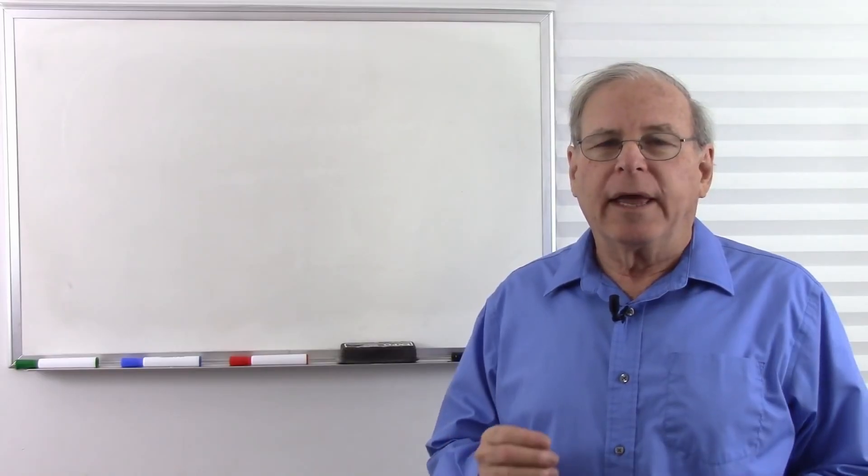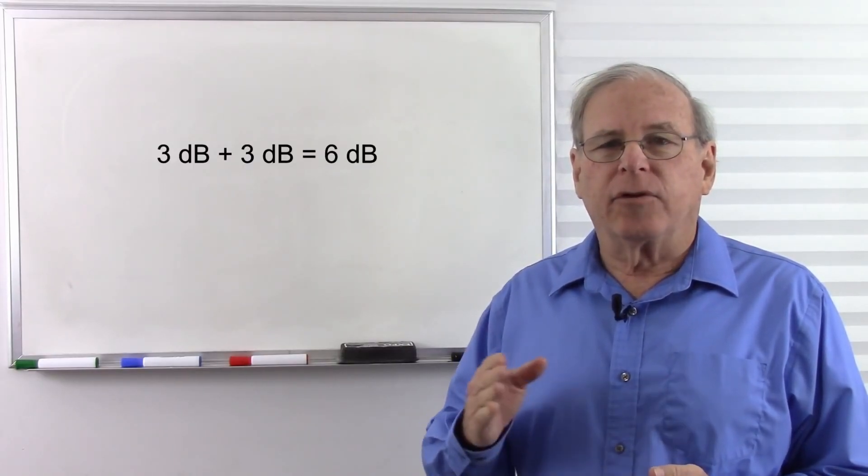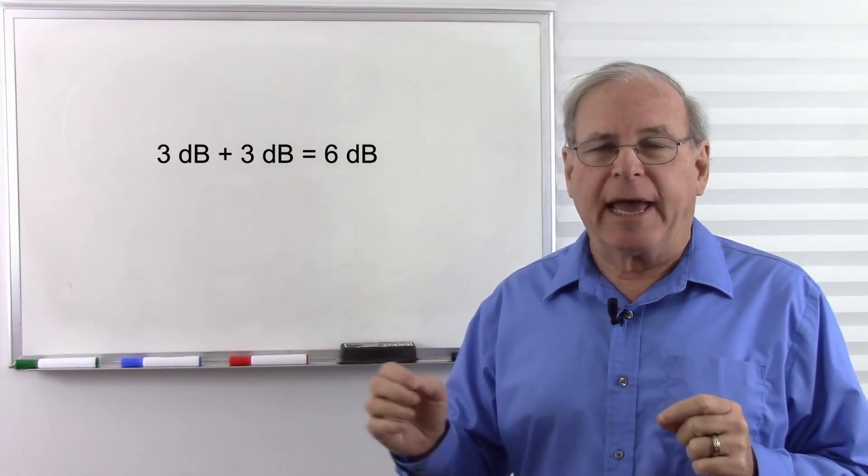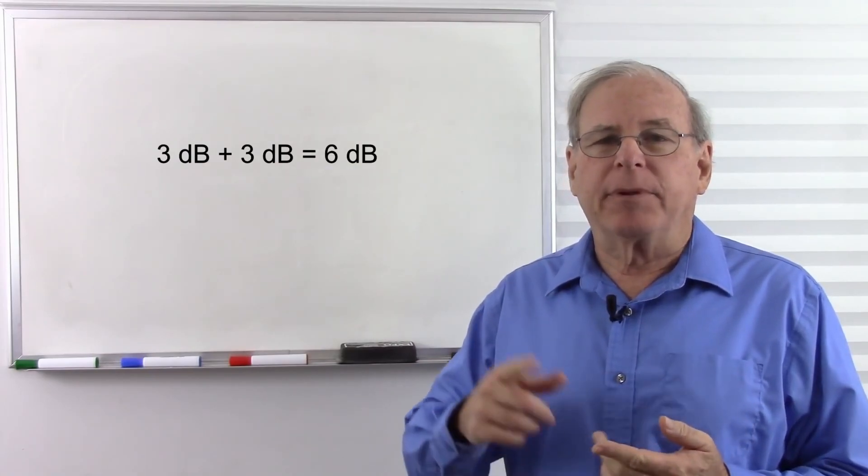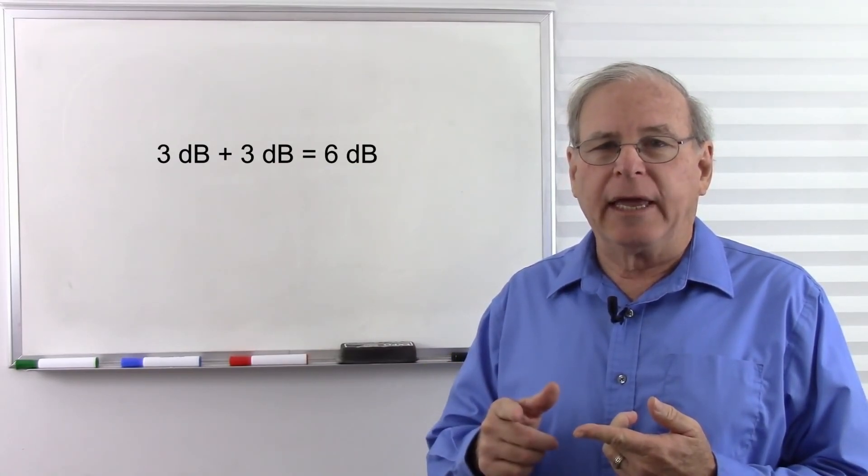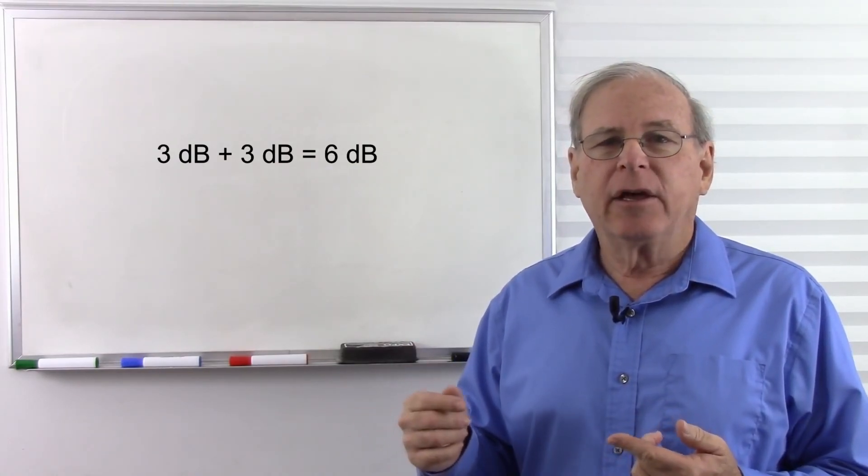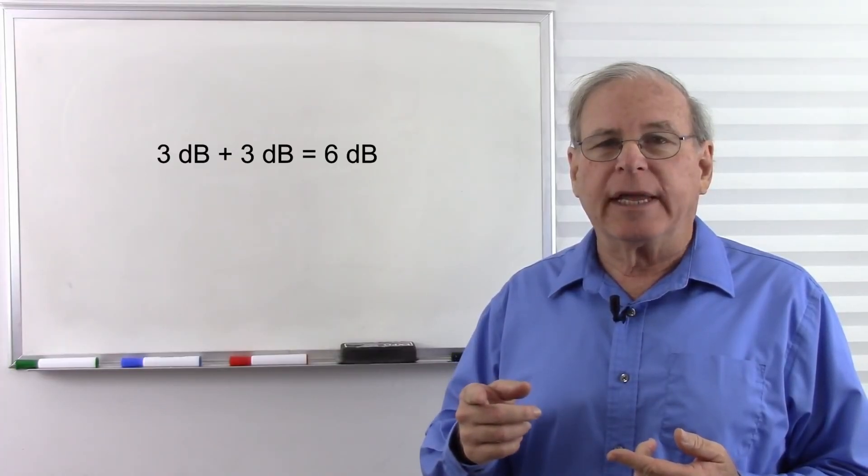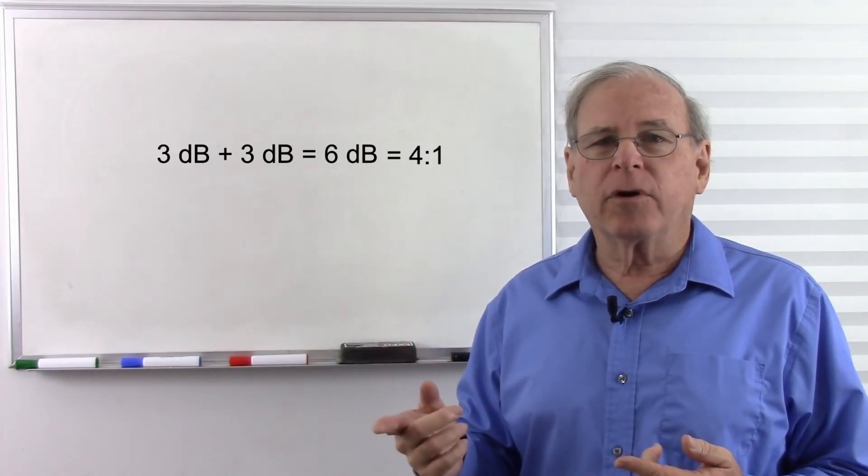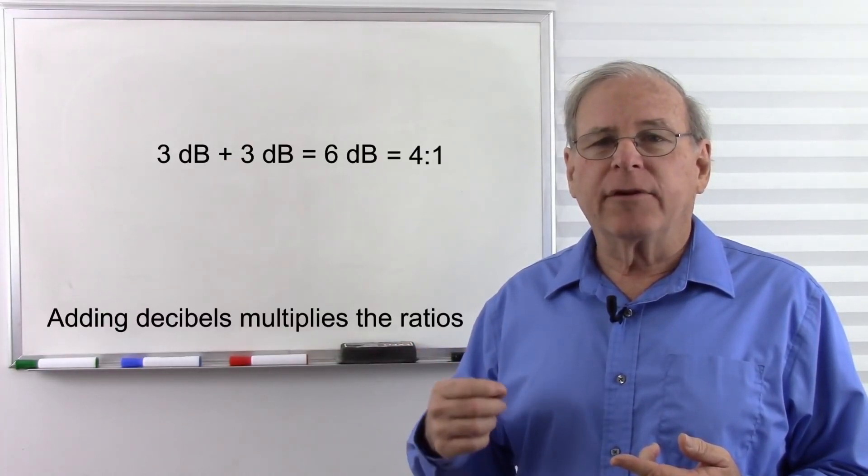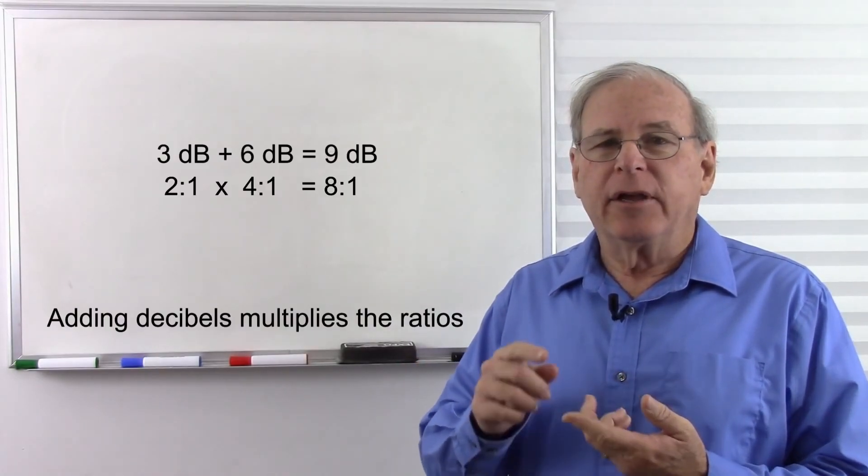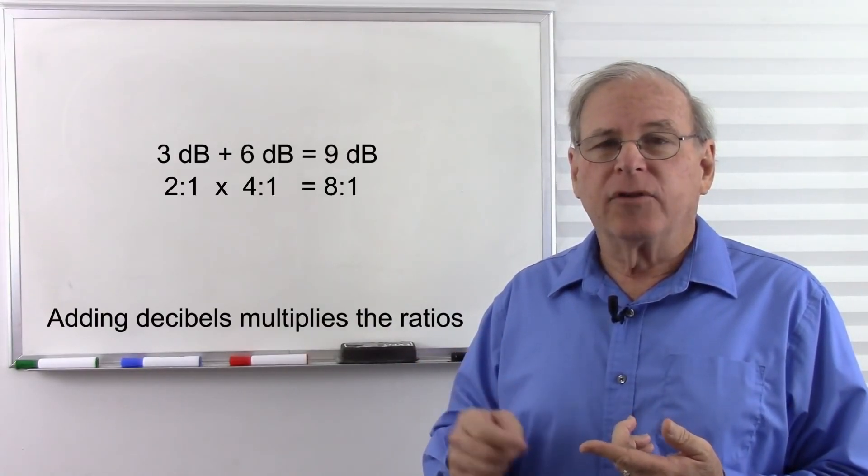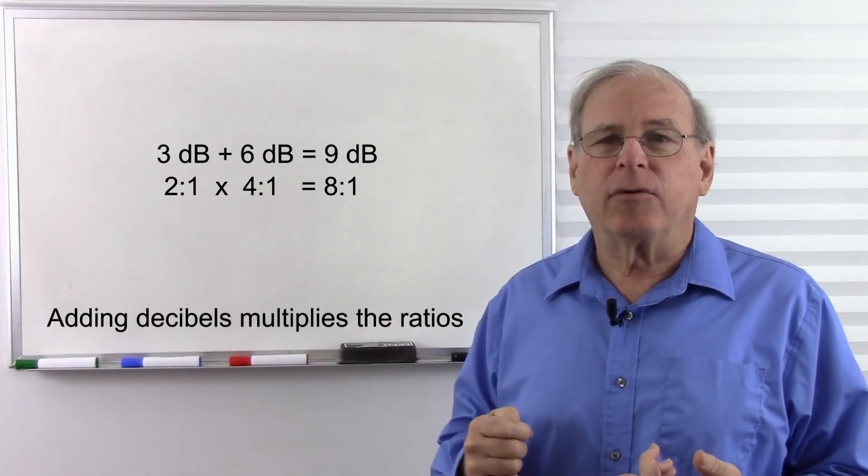Let's say we have an amplifier that has a gain of 6 dB. Well, if we add 3 dB to 3 dB, we get 6 dB. Your dBs simply add together. So 3 dB plus 3 dB, that's a 2 to 1 gain, plus another 2 to 1 gain. So 3 dB is a 2 to 1 gain, 6 dB is a 4 to 1 gain. What's another 2 to 1 gain? 3 dB is 2 to 1, 6 dB is 4 to 1, so 9 dB is 8 to 1.